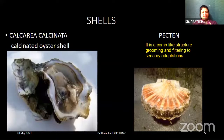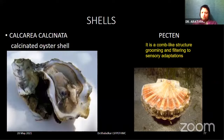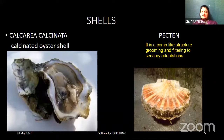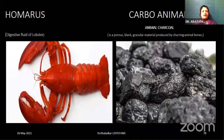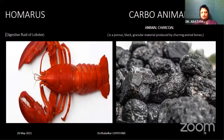Next, shell. We have two examples. One is the calcinated oyster shell — the middle layer of the oyster shell — called Calcarea carbonica. It is the middle layer that we use. Next, pectane — a comb-like structure used for grooming and filtering, for the sensory adaptations of aquatic animals. Pectane is the name of the drug. Then Homarus — prepared from the digestive fluid of lobster. These are unique examples. Next, carbo animalis — the animal charcoal — a porous black granular material produced by charring the animal tissues. We also have carbo vegetabilis — do not mix this with animal sources — it is a vegetable source prepared from birch wood.